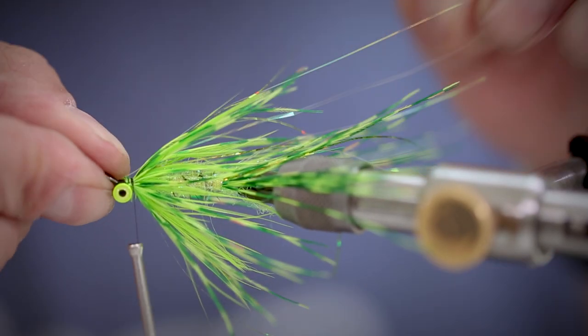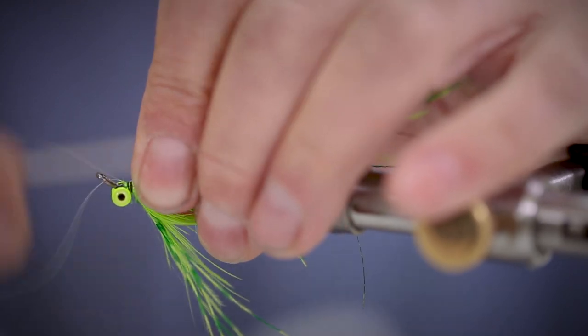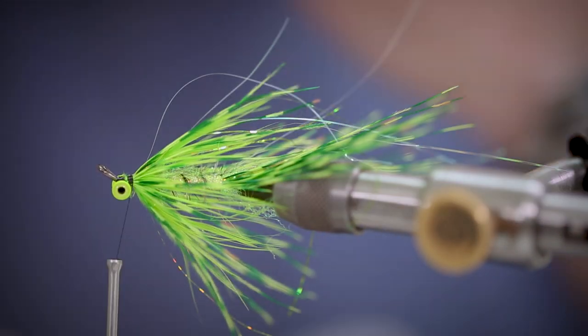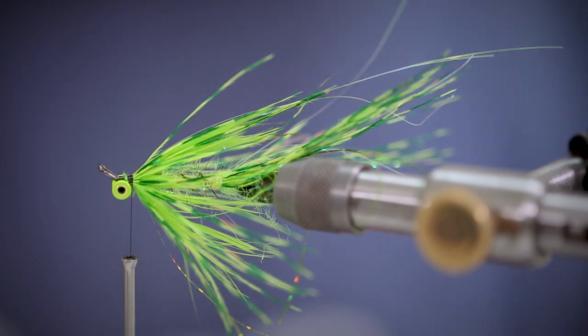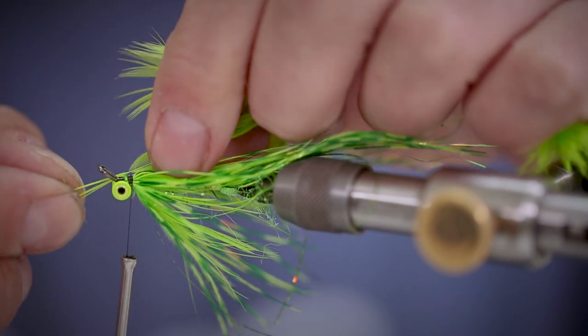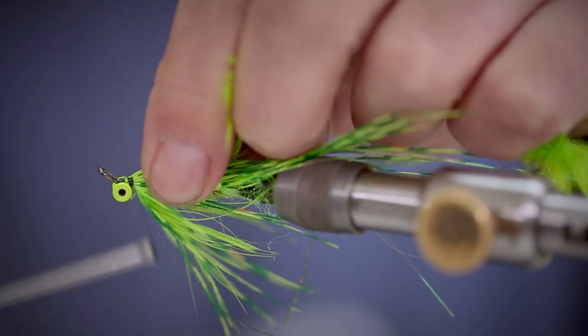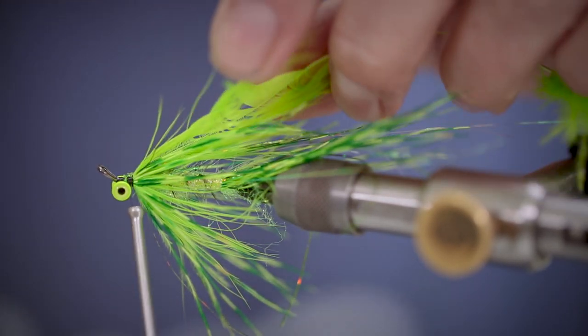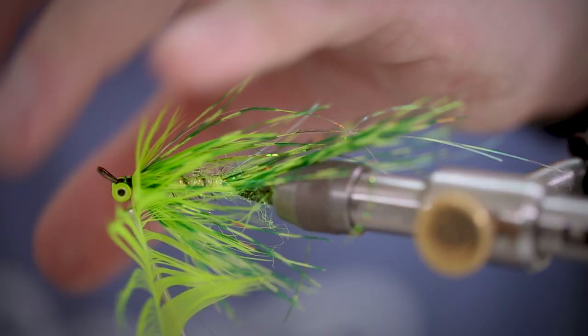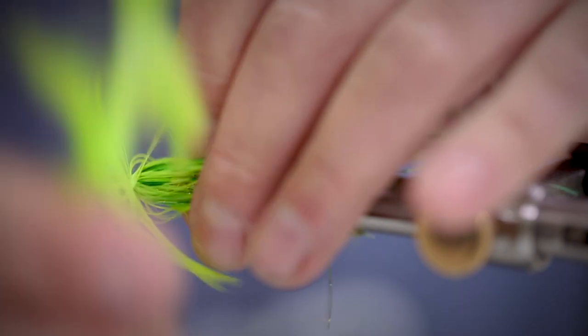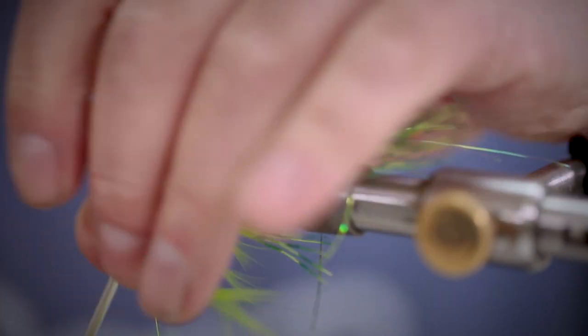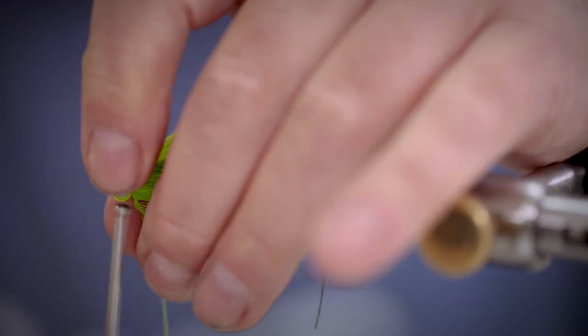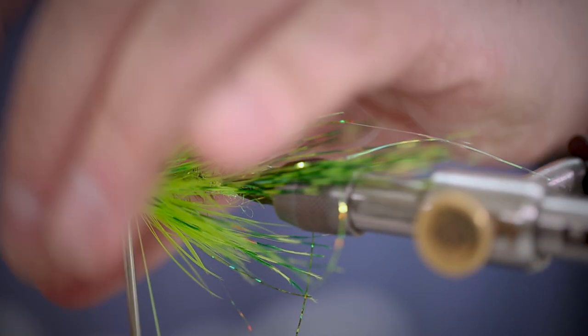Next we're tying in some pearl flash over the top of the fly, and we're going to add in another soft hen hackle in chartres again. As many turns as you like until you're happy with the fibre content.